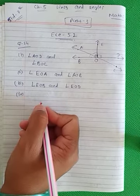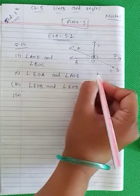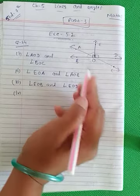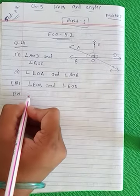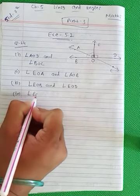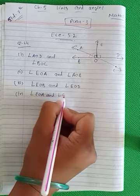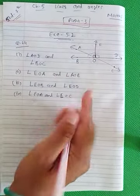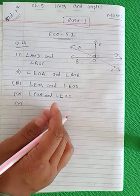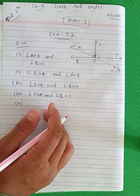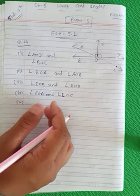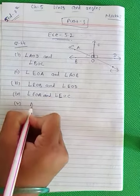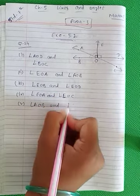Next, angle EOA and angle EOC — when you add these, you get 180 degrees, but they are not equal, so you can say these are unequal supplementary angles. Then fifth number: adjacent angles that do not form a linear pair. So you will find angle AOB and angle AOE.